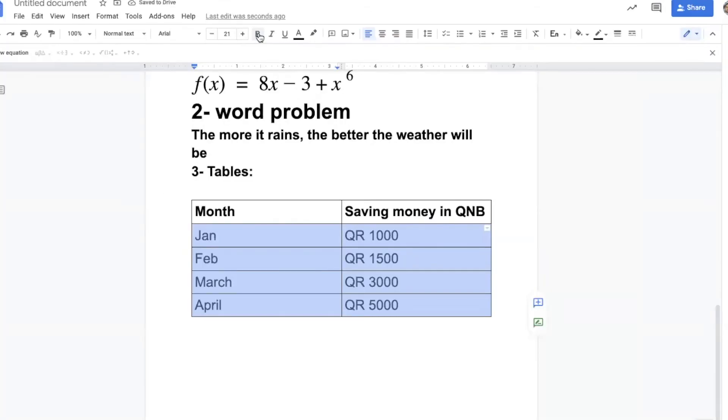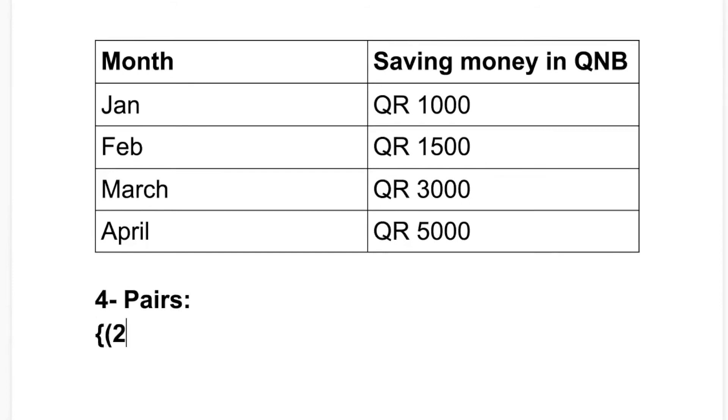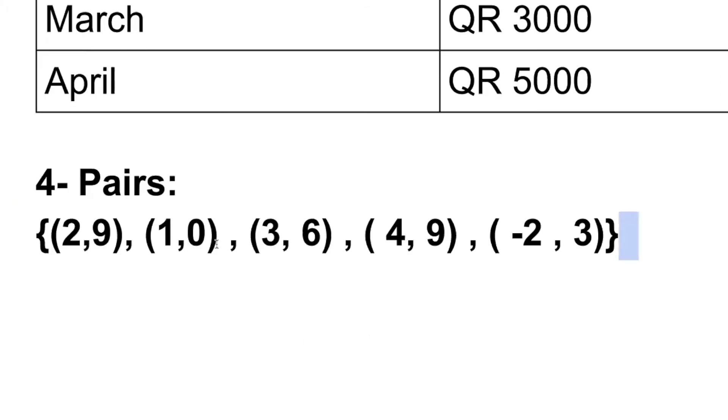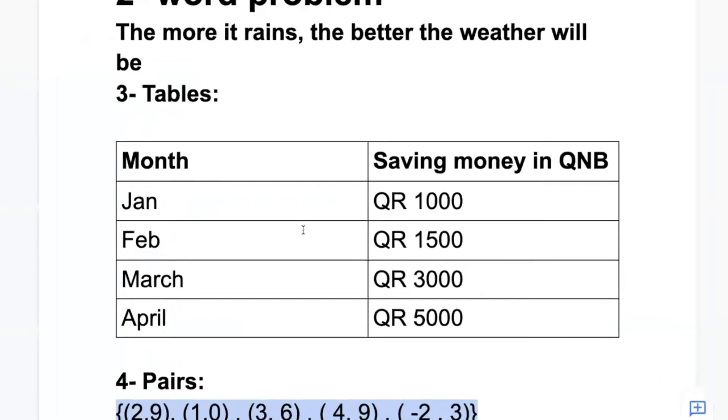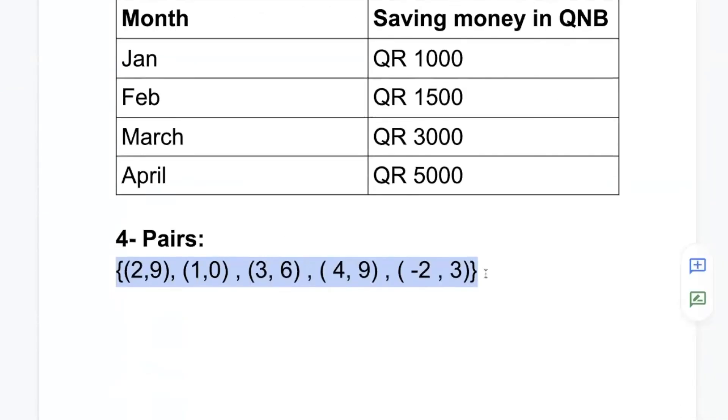The fourth way of representing a function is called pairs. I will give you x and y. For example: (2, 9), (1, 0), (3, 6), (4, 9), (-2, 3). So we can represent a function by pairs - I give you x and y.